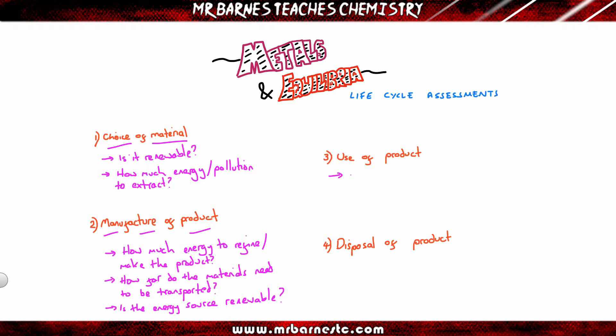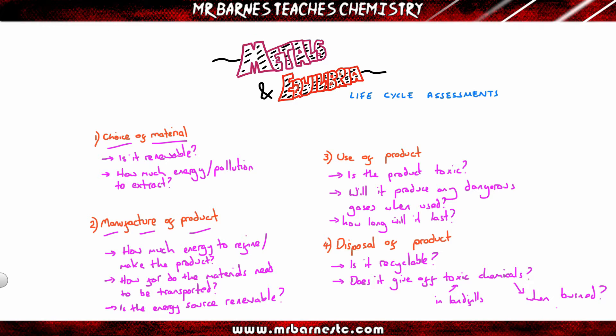Use of product: is it toxic? Is there one that's toxic, one that isn't? You go with the one that's not toxic. Will it produce any dangerous gases when used? And how long will it last for? If one's going to be a one use and done, and the other one's going to last for a long time, you're probably going to want one that lasts. And then disposal: is it recyclable? If it's recyclable, that's a massive advantage. Does it give off toxic chemicals when you bury them in landfills or when you burn them? If it does that, that's a bad thing. So it's about weighing up the pros and cons of all the different ones, choosing the one that you think is best and explaining why.